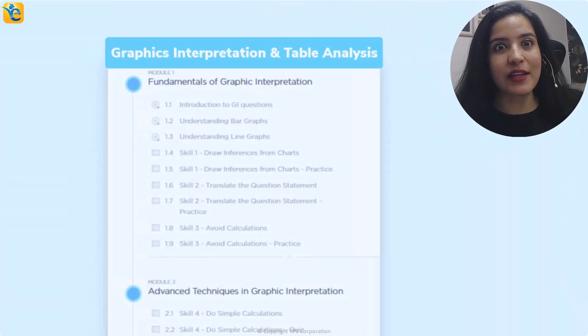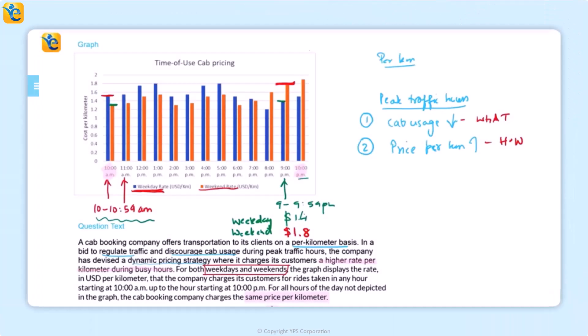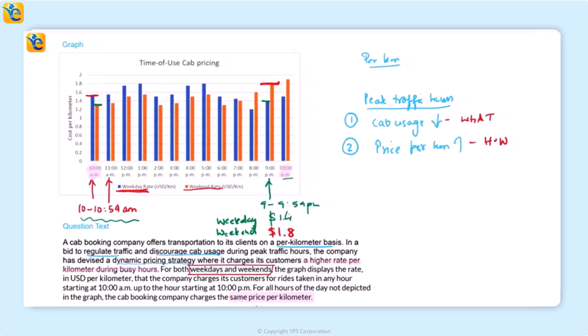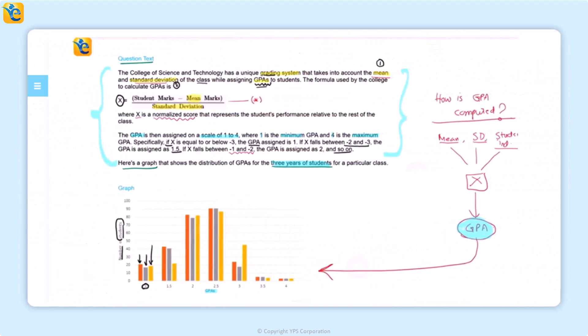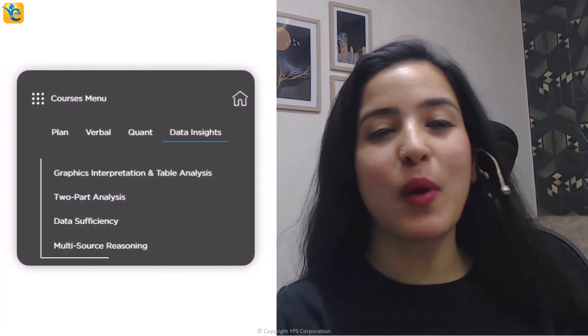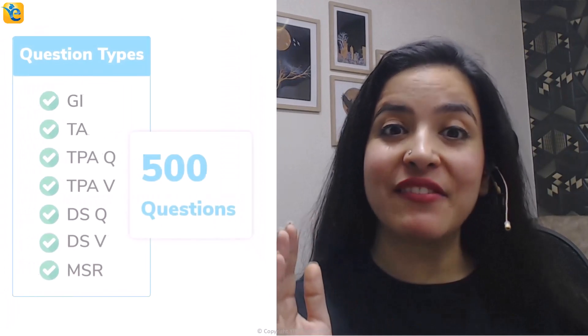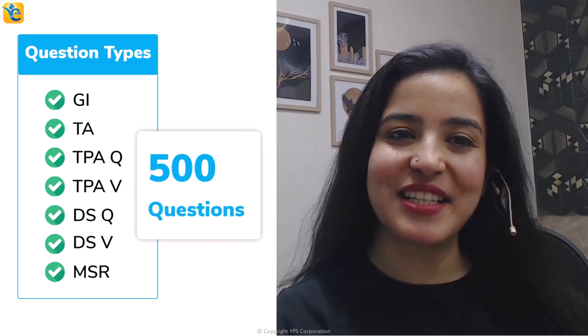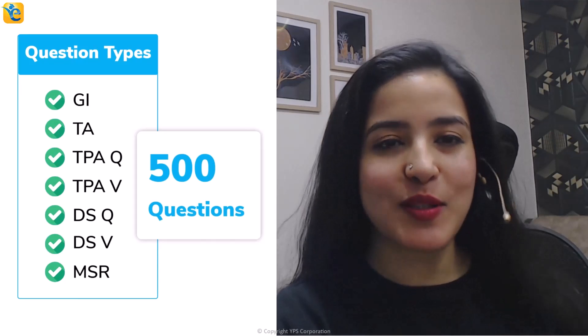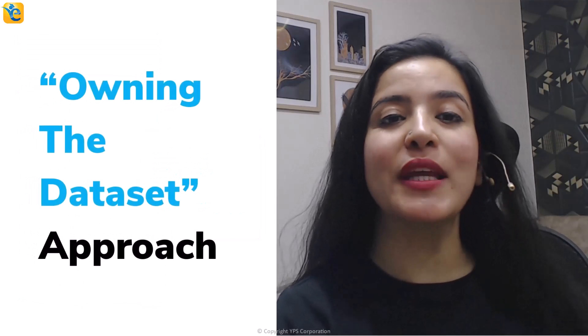In the e-GMAT course, you'll learn how to build translate process skills through purpose-built exercises. Throughout the DI course, through around 500 questions, you'll learn such process skills so you can comfortably use the owning the data set approach.